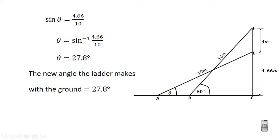Welcome back. In the previous video we found the new angle the ladder makes with the ground, which is 27.8 degrees. We are now going to find the distance the foot of the ladder slipped back from its original position.